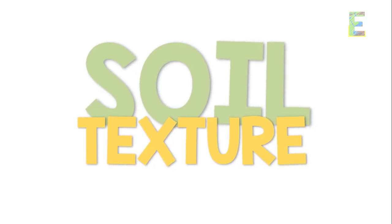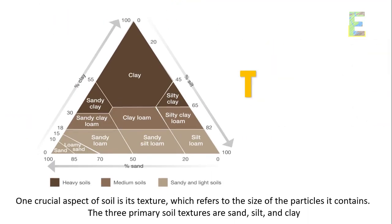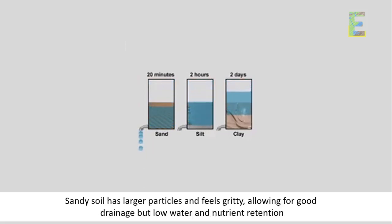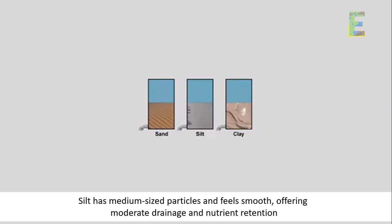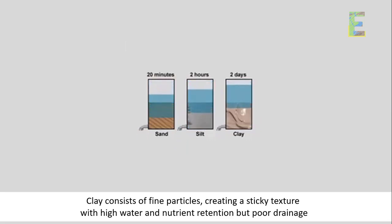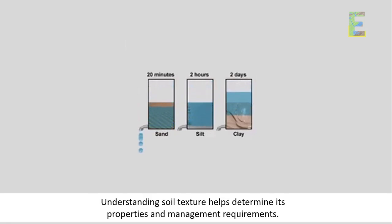Soil Texture. One crucial aspect of soil is its texture, which refers to the size of the particles it contains. The three primary soil textures are sand, silt, and clay. Sandy soil has larger particles and feels gritty, allowing for good drainage but low water and nutrient retention. Silt has medium-sized particles and feels smooth, offering moderate drainage and nutrient retention. Clay consists of fine particles, creating a sticky texture with high water and nutrient retention but poor drainage. Understanding soil texture helps determine its properties and management requirements.